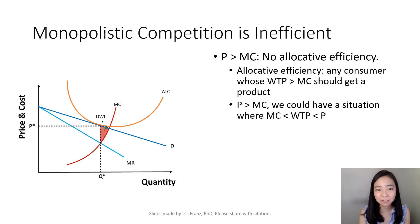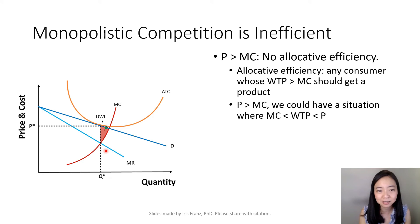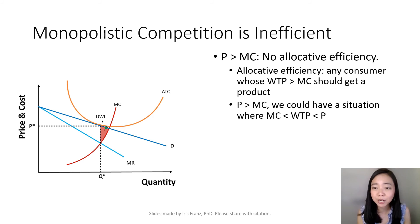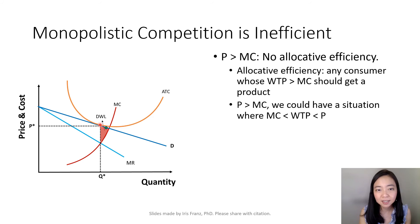For example, consider a consumer whose willingness to pay is at the green spot. That consumer's willingness to pay is higher than the marginal cost, but lower than the price P*. So this consumer is not going to get the product. In fact, all consumers whose willingness to pay falls between P* and marginal cost have a willingness to pay greater than marginal cost but lower than P* — and they will not get the product. The welfare loss is exactly this red triangle.